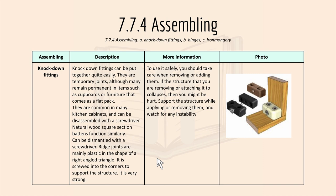Then we have 7.7.4 assembling. Knockdown fittings can be put together quite easily and they are temporary joints. Natural square section blocks function similarly and can be dismantled with a screwdriver. These joints are mainly in the shape of a right-angled triangle and are quite strong. To use them safely, take care when removing or adding them — if the structure collapses you might be hurt. Support the structure while applying or removing them and watch for any instability.